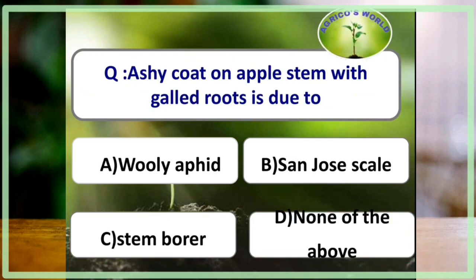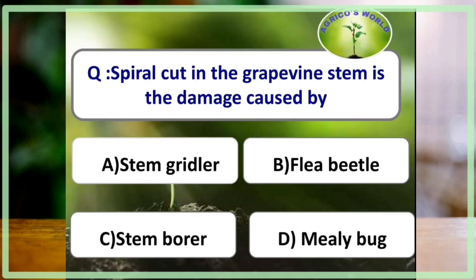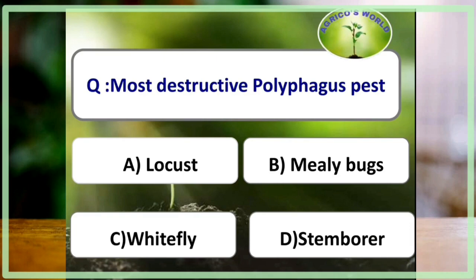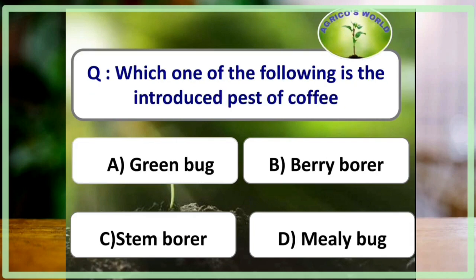Ashy coat on apple stem with galled roots is due to woolly aphid. Spiral cut in the grapevine stem is the damage caused by the stem girdler. Henosepilachna vigintioctopunctata is a pest of both potato and brinjal. The most destructive polyphagous pest causing greater damage to crops is locust. The introduced pest of coffee is berry borer.